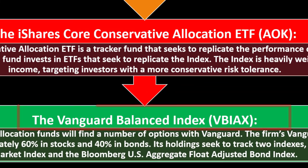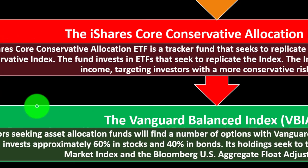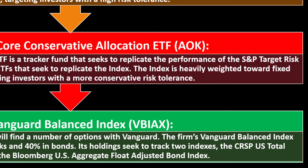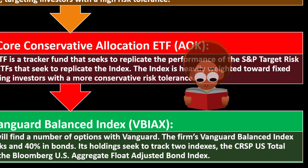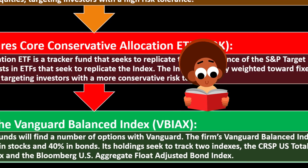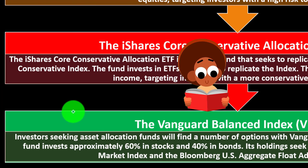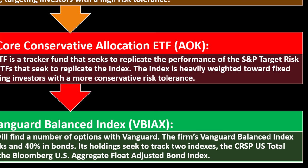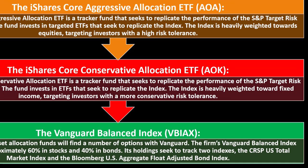Investors seeking asset allocation funds will find a number of options with Vanguard. The Vanguard Balanced Index Fund (VBIAX) invests approximately 60% in stocks and 40% in bonds. Its holdings seek to track two indexes: the CRSP US Total Market Index and the Bloomberg U.S. Aggregate Float Adjusted Bond Index.